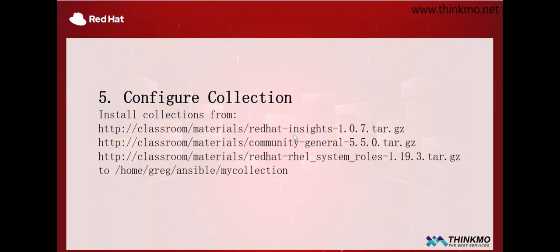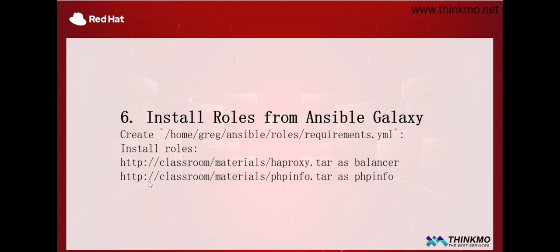Both questions involve installing a specific service through a file. However, in one of the questions the installation is under the 'my_collection' directory inside Ansible. For question six there is no specific installation path requirement, which means we can install it to the default path. Just make sure you specify the correct file — don't accidentally point to the file from question five when working on question six.